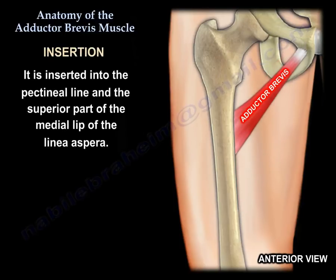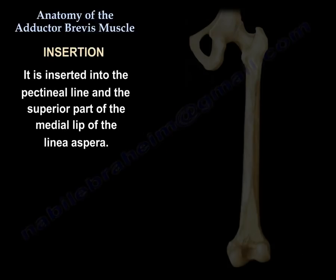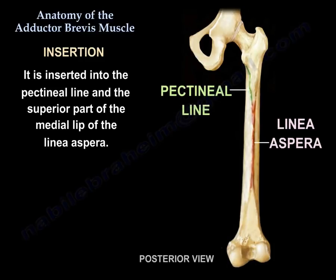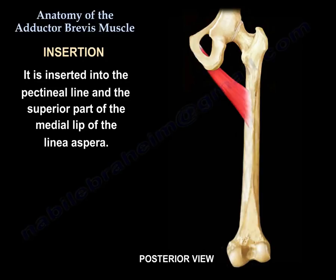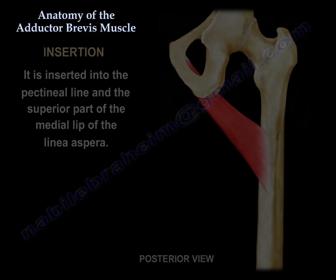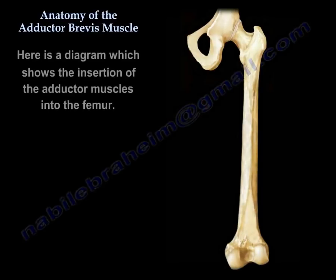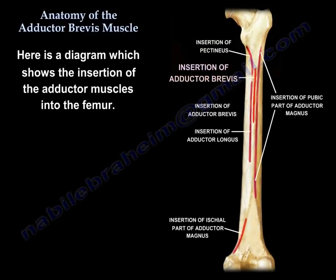The adductor brevis muscle is inserted into the pectineal line and the superior part of the medial lip of the linea aspera. Here is a diagram that shows the insertion of the adductor muscles into the femur.